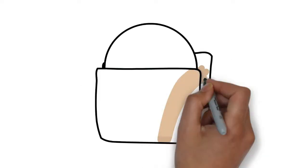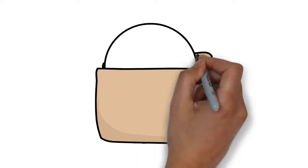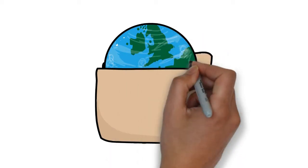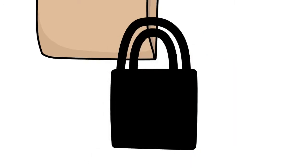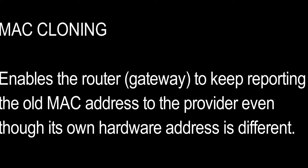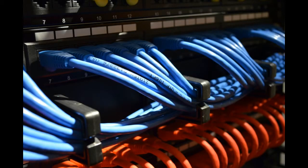Some internet service providers link each residential customer account to the MAC address of the home network router or other gateway device. When a residential gateway is changed, the internet provider sees a different MAC address and blocks that network from going online. A process called cloning solves this problem by enabling the new router to keep reporting the old MAC address to the provider, even though its own hardware address is different.